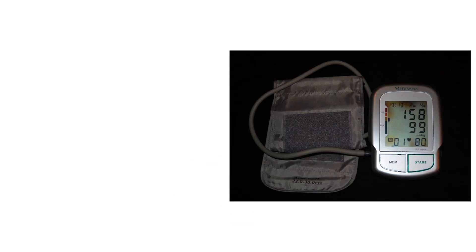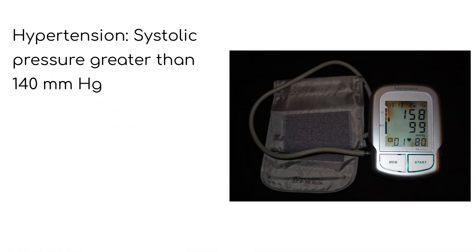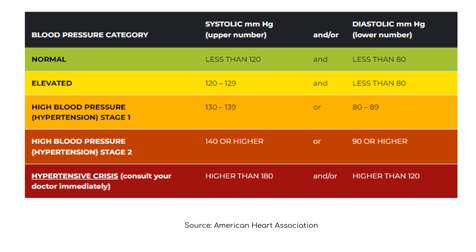Hypertension is characterized by an arterial pressure of 140 millimeters of mercury or higher. According to the American Heart Association, in adults, normal blood pressure is less than 120 over 80.